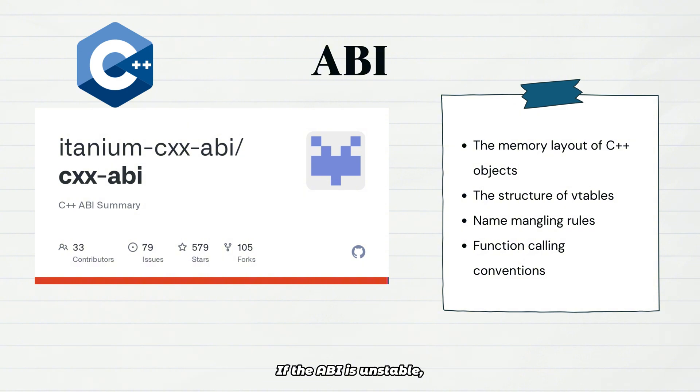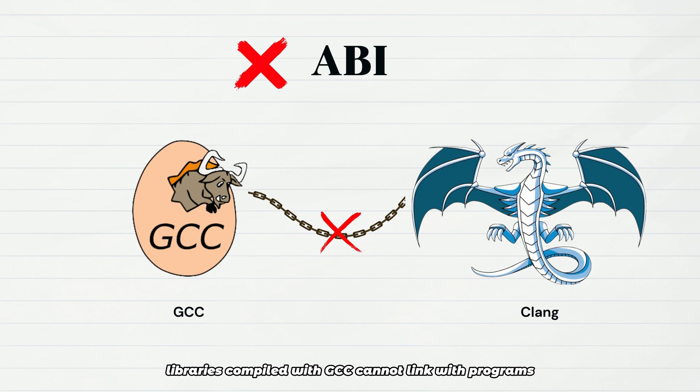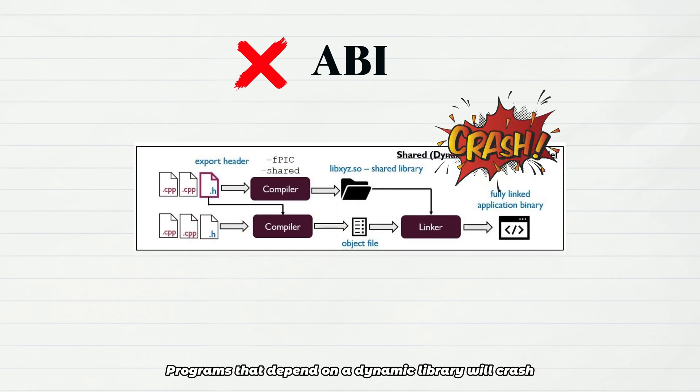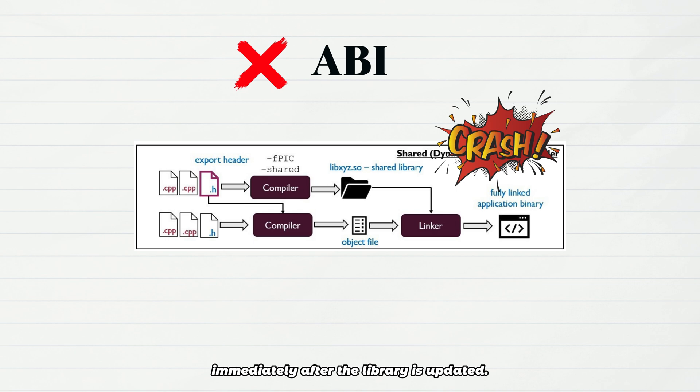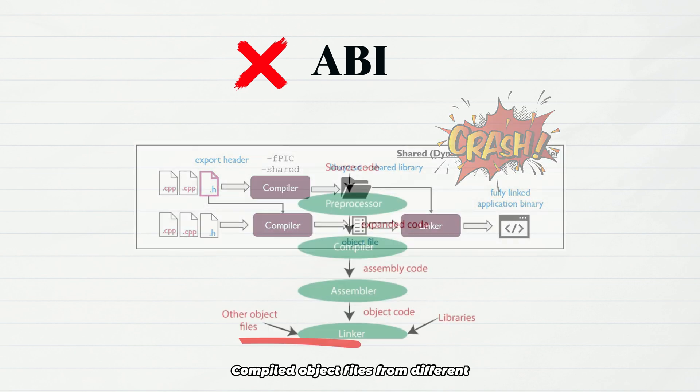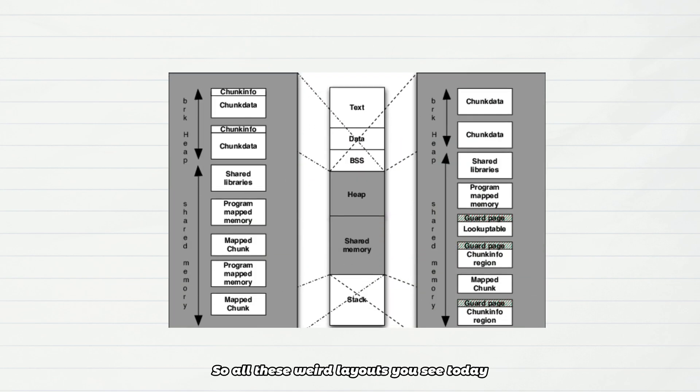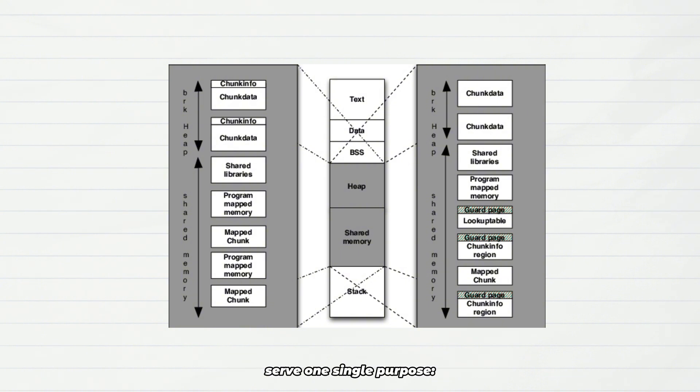If the ABI is unstable, libraries compiled with GCC cannot link with programs compiled with Clang. Programs that depend on a dynamic library will crash immediately after the library is updated. Compiled object files from different C++ files cannot be correctly linked into an executable program. So all these weird layouts you see today serve one single purpose: to ensure that different compilation units and different libraries can cooperate correctly at the binary level.